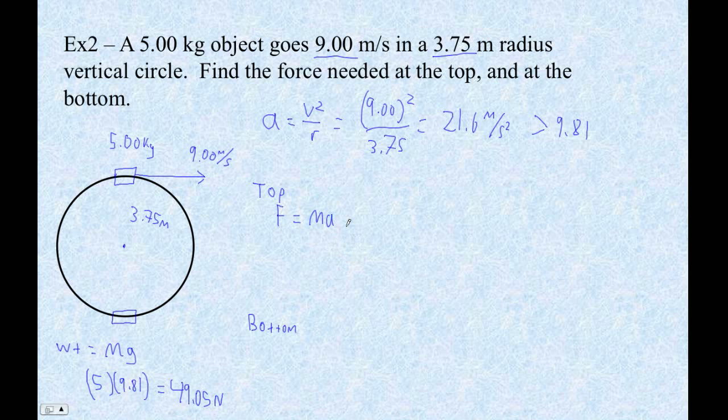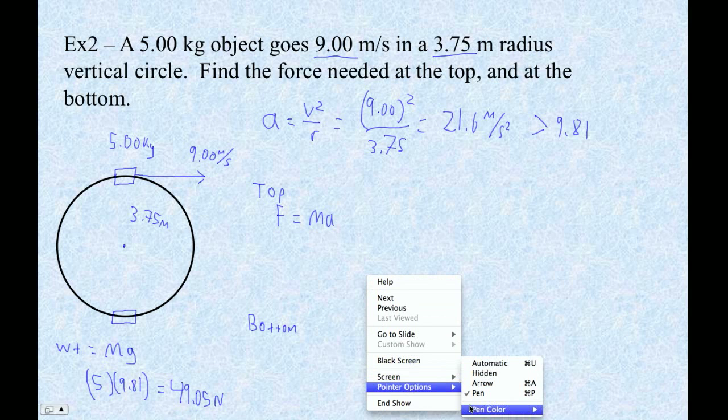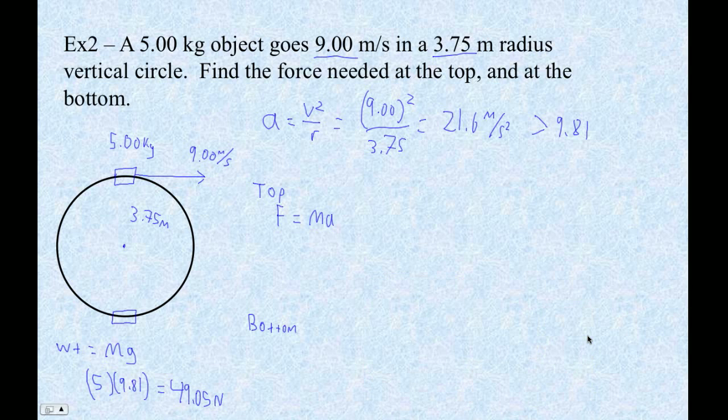And so if we look at the forces, we're switching to red now. If we look at the forces acting on this thing at the top, there's going to be the tension. And we sort of know that the tension is going to be down, but we'll just say the unknown force. But there's also the force of gravity, and the force of gravity is going to be down. And that's going to be 49.05.